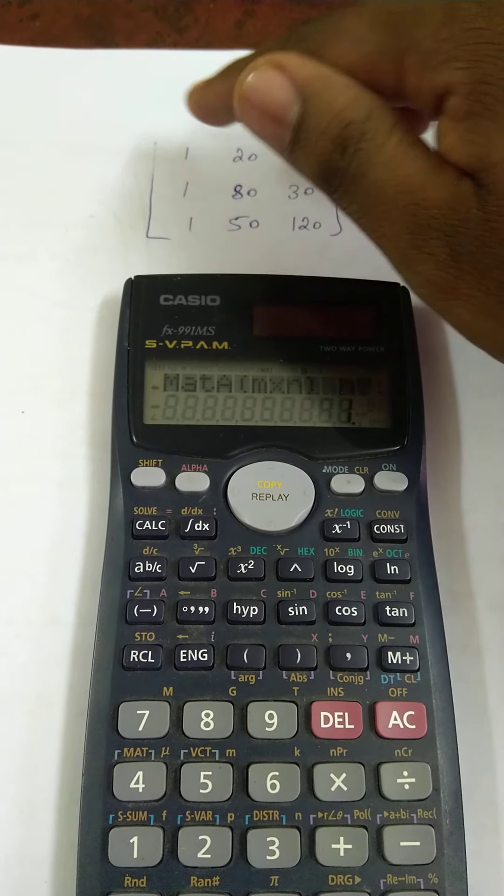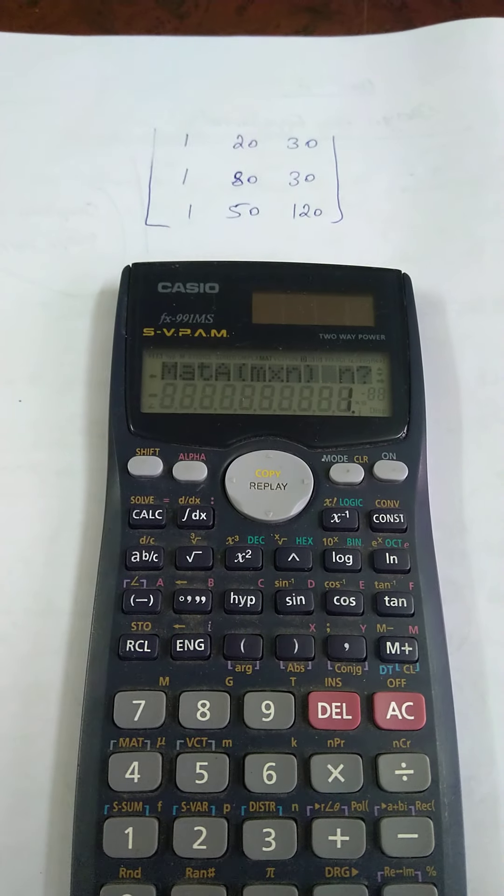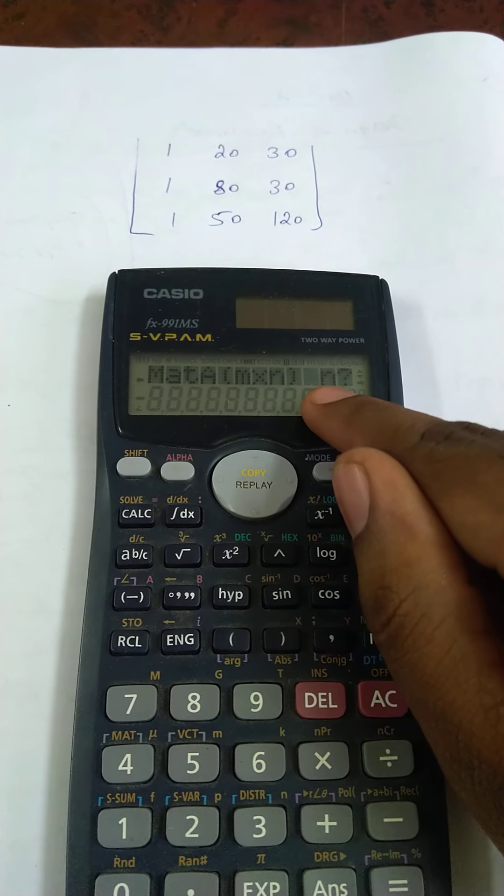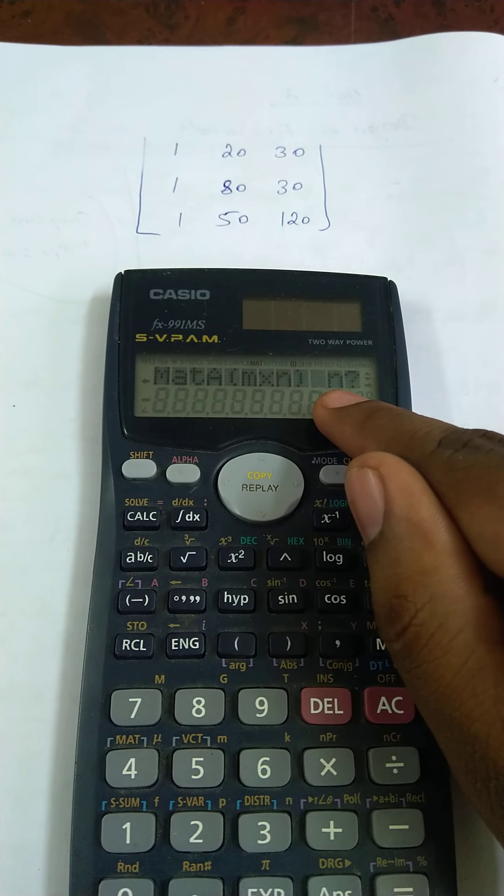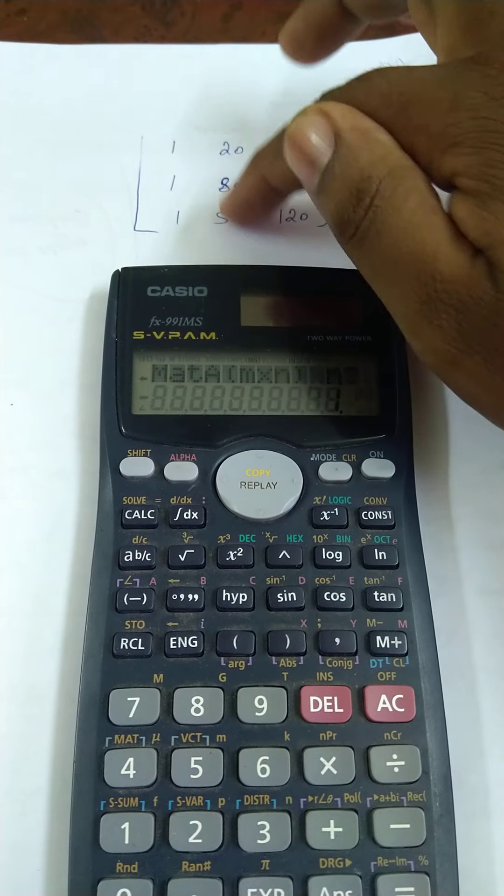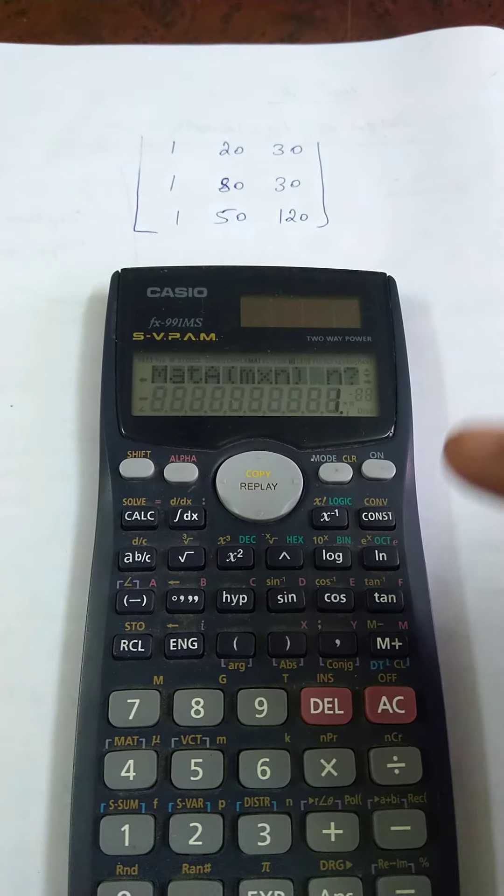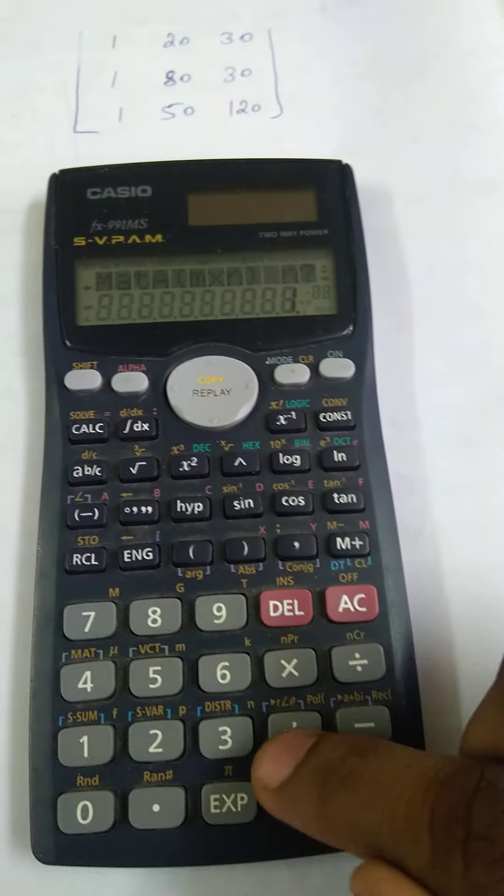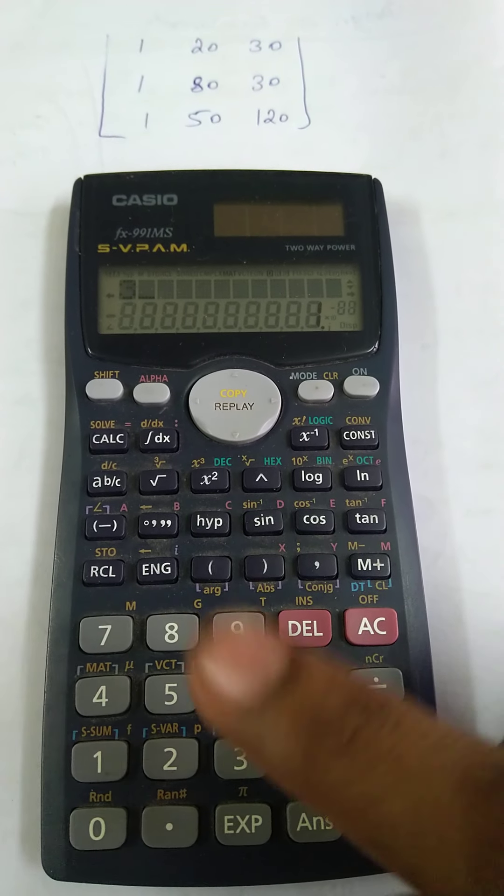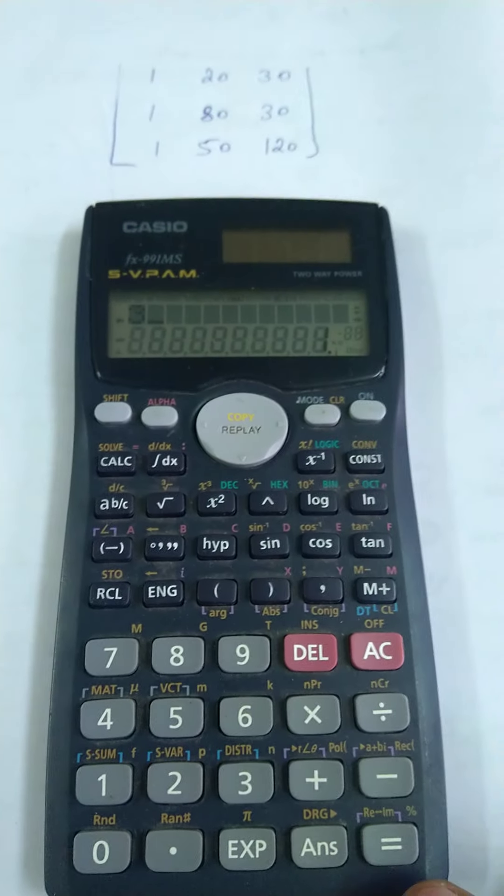Then column. N means number of columns. The number of columns is 1, 2, 3, so 3 columns. Therefore press 3 for N equals 3, then press equal.